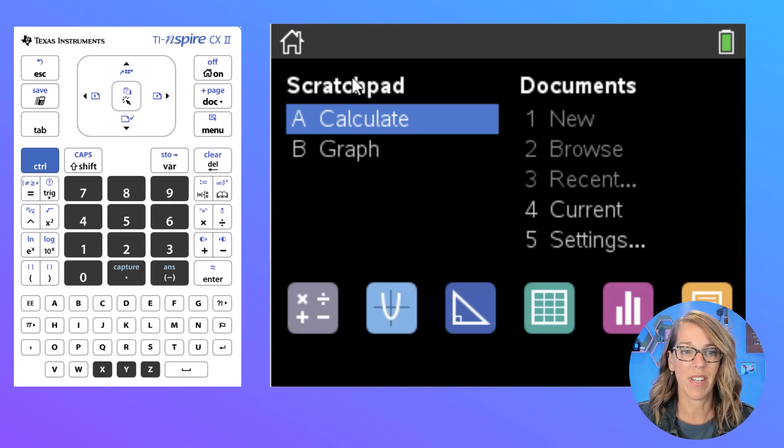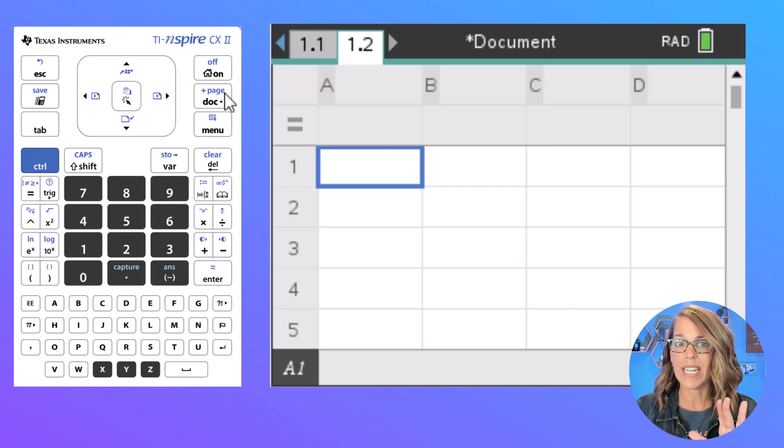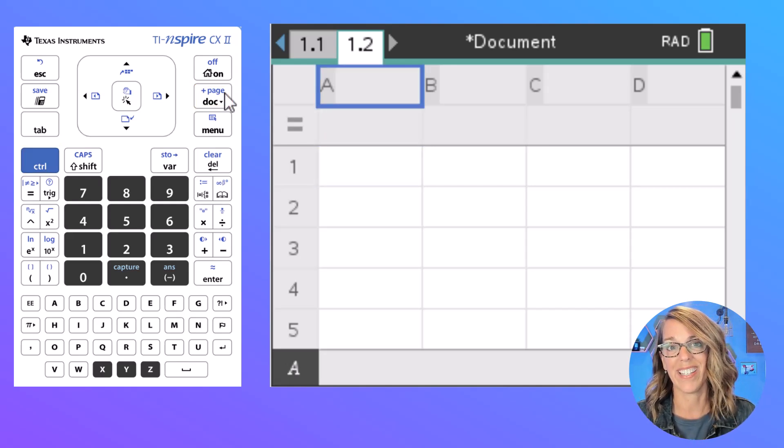I'm going to create a new document, so let's go ahead and choose add page. I'm going to go control add document, and we're going to add lists and spreadsheets, so we're going to type number 4 to choose that. I'm going to start by naming my list.